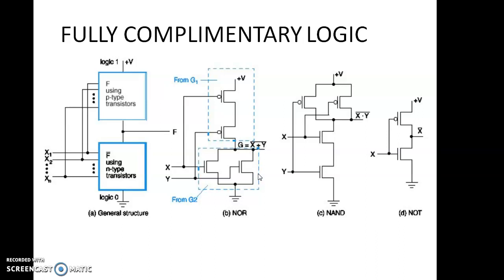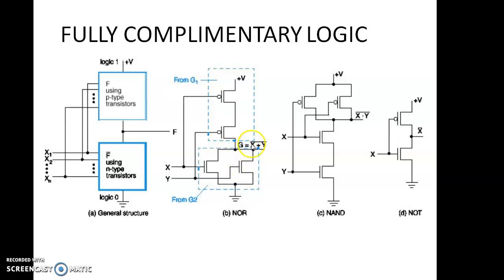Next, fully complementary logic. Here pull-down transistors and pull-up transistors — that means NMOS and PMOS transistors are connected. Then connect their inputs. From the middle of this network we will get the output F. Example NOR: NOR means X+Y all bar. For NMOS, addition means parallel, so X and Y are connected in parallel. For PMOS, just opposite to NMOS — it is connected in series. Then connect their inputs. From the middle of this network we will get the output G = (X+Y) all bar.